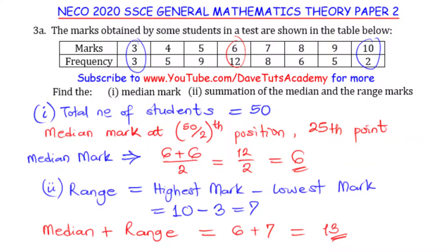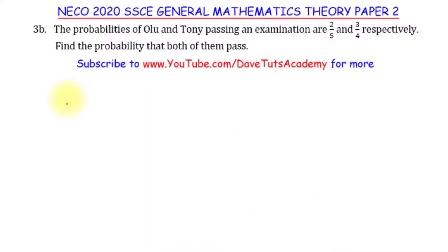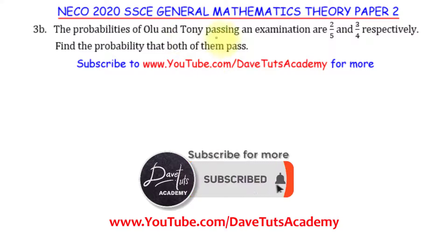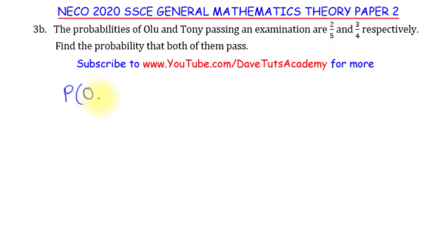In this question on probabilities, we are told that the probabilities of Olu and Tony passing an examination are 2/5 and 3/4 respectively. We are to find the probability that both of them pass. The probability of Olu passing, P(O), is 2/5, and the probability of Tony passing, P(T), is 3/4. They respectively assign the first to the first name and second probability to the second name.